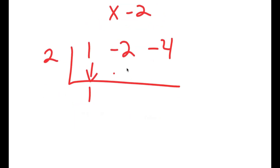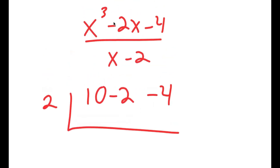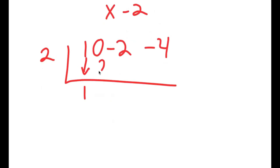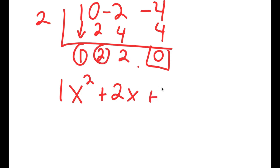Bringing down 1: 2 times 1 is 2; 0 plus 2 is 2; 2 times 2 is 4; negative 2 plus 4 is 2; 2 times 2 is 4; negative 4 plus 4 is 0. We have a remainder of 0, and we get x squared with coefficient 1, plus 2x with coefficient 2, plus 2 at the end.